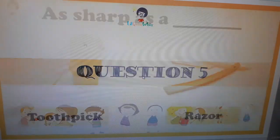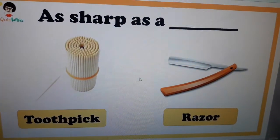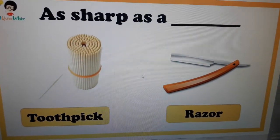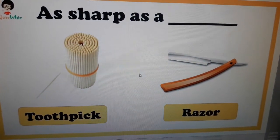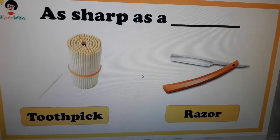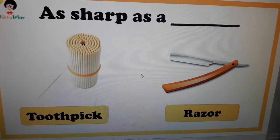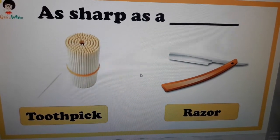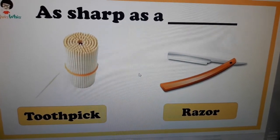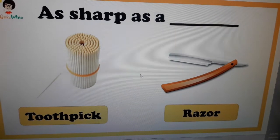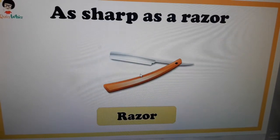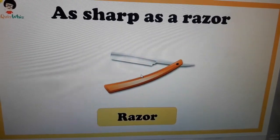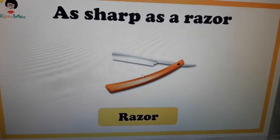Question number five: as sharp as a toothpick or razor? The answer is razor — as sharp as a razor.